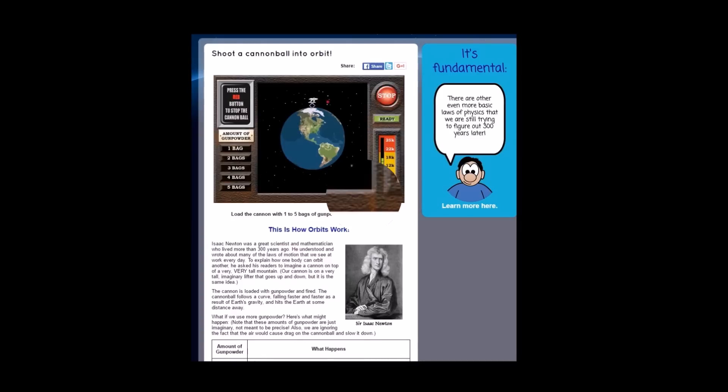But if you shoot it just right at around 18,000 miles an hour it'll fall but it'll just keep falling around the Earth because it's moving just as fast as the Earth is curving away from it. This is called an orbit. And then if you shoot it too fast it'll just fly off into space.